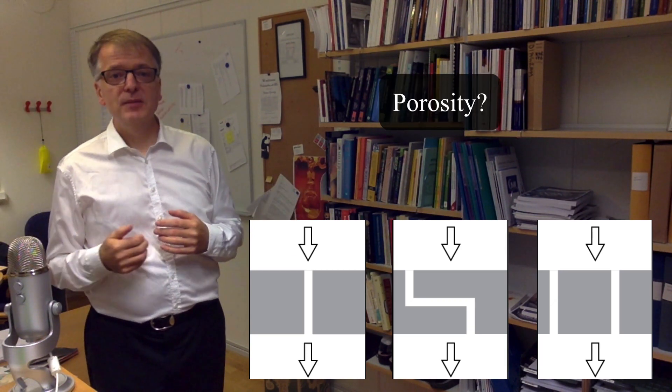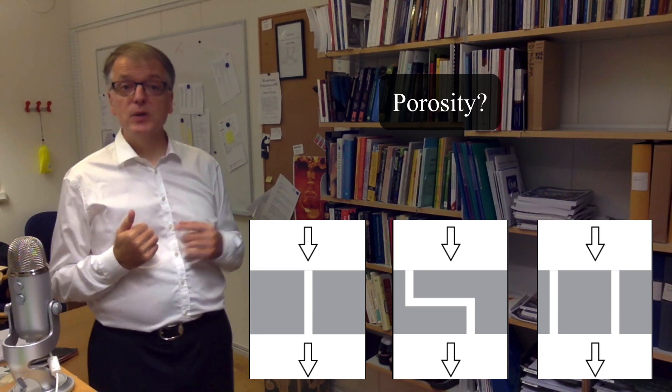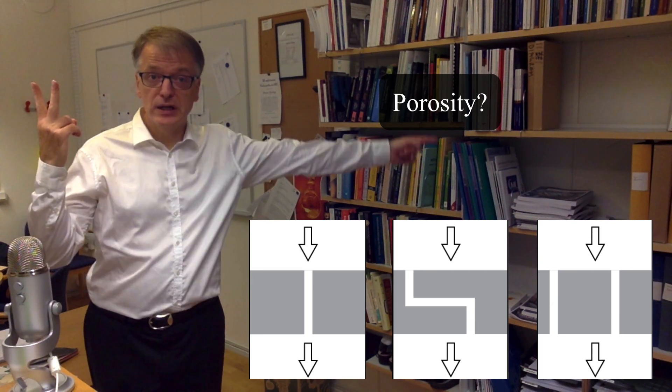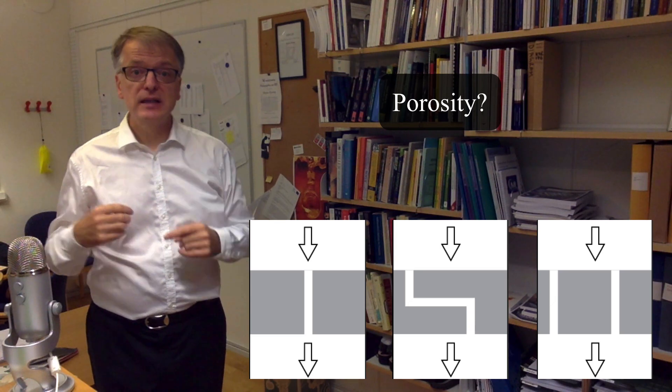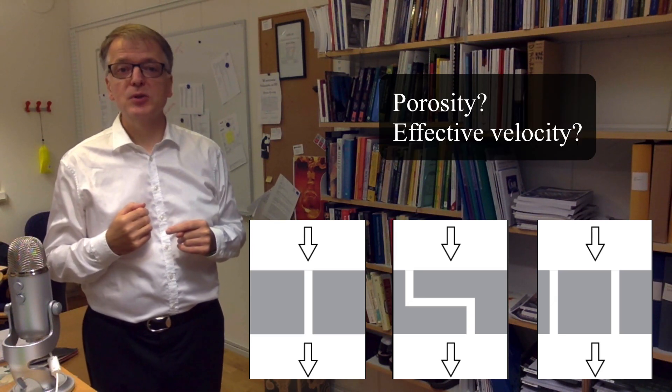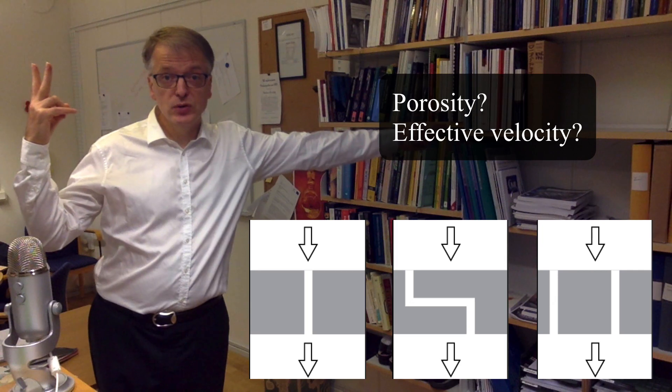What is true for this new material in the middle, which has only one channel but a channel that is twice as long? Is the porosity the same as the porosity of the porous media with one channel or two channels? Is the effective velocity the same as the effective velocity in the porous media with one channel or two channels?